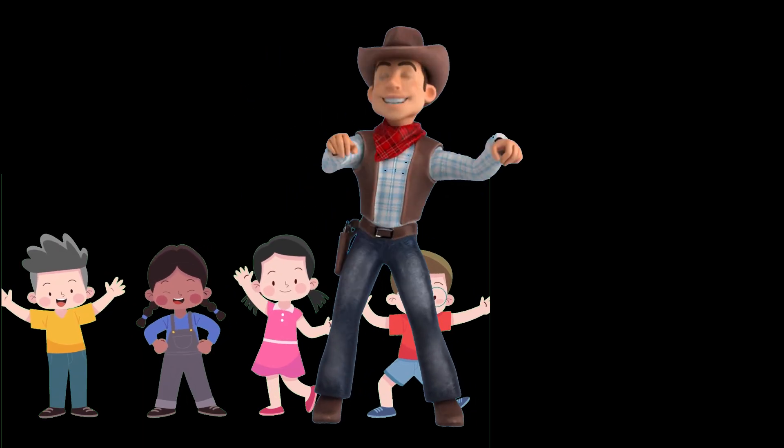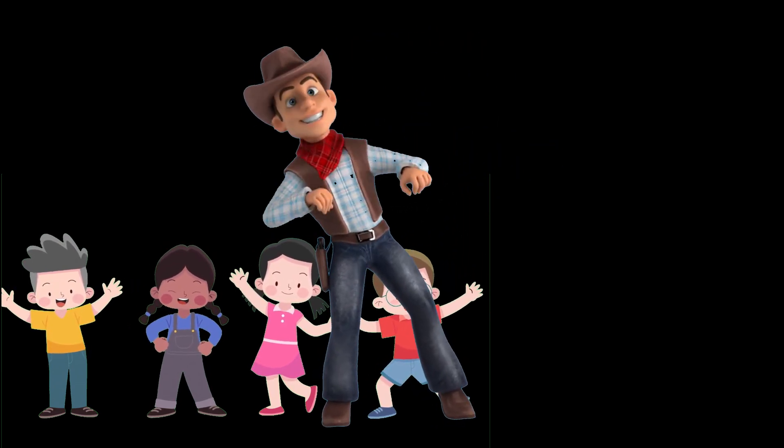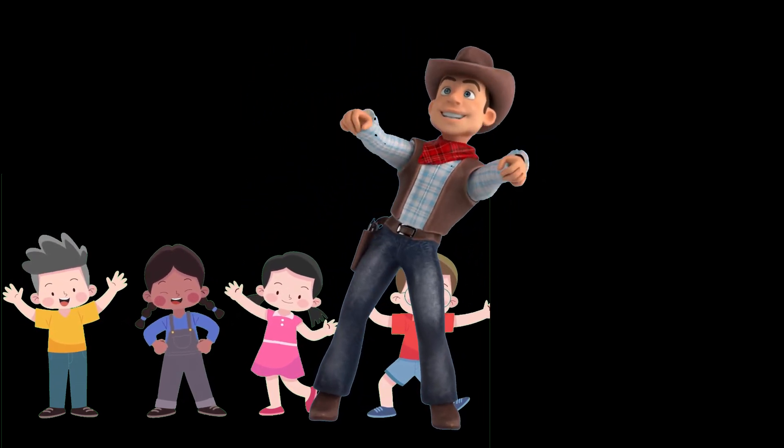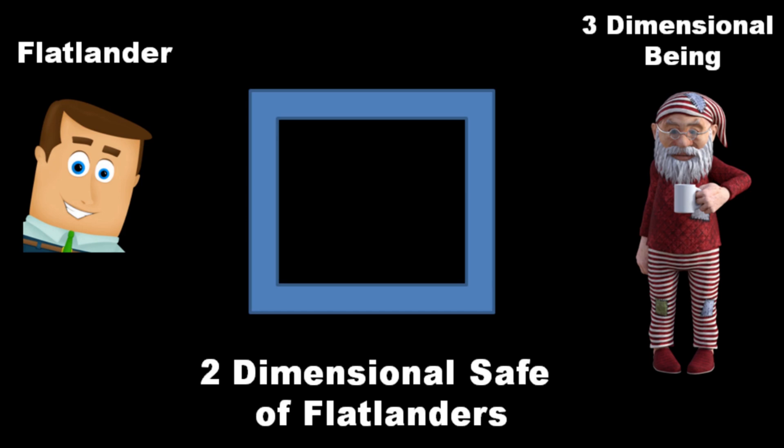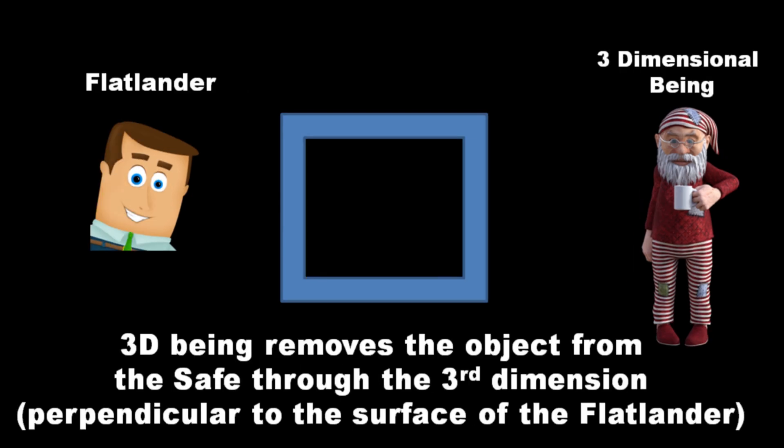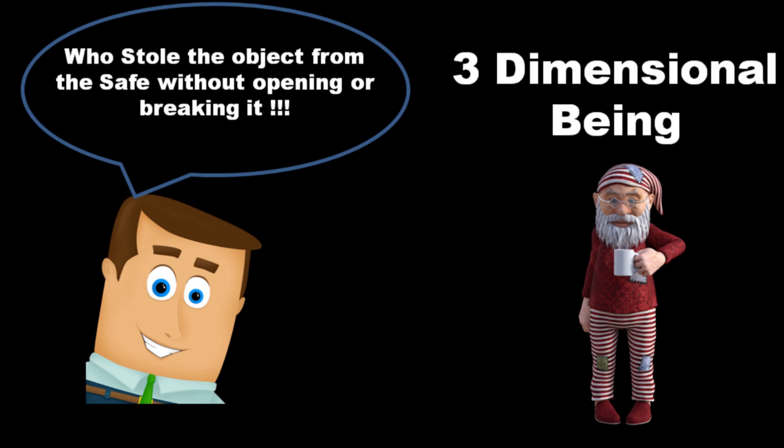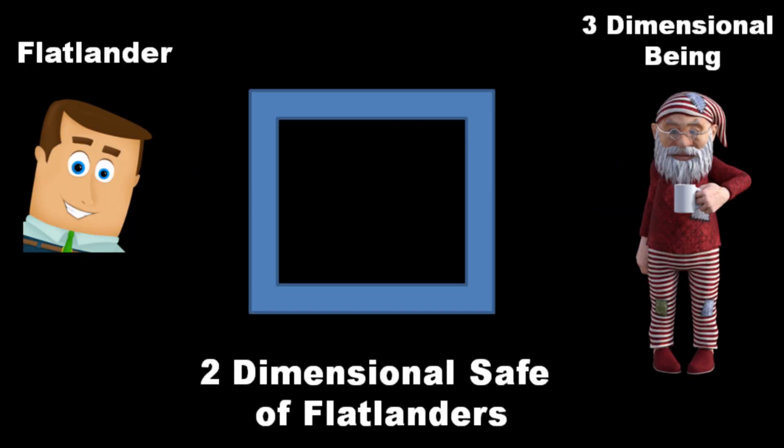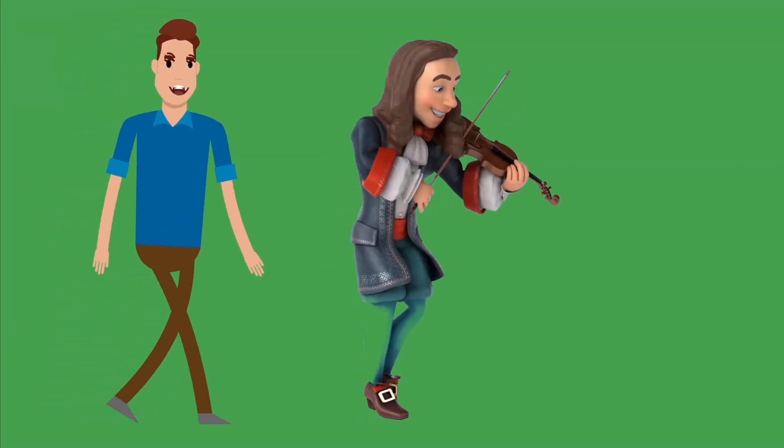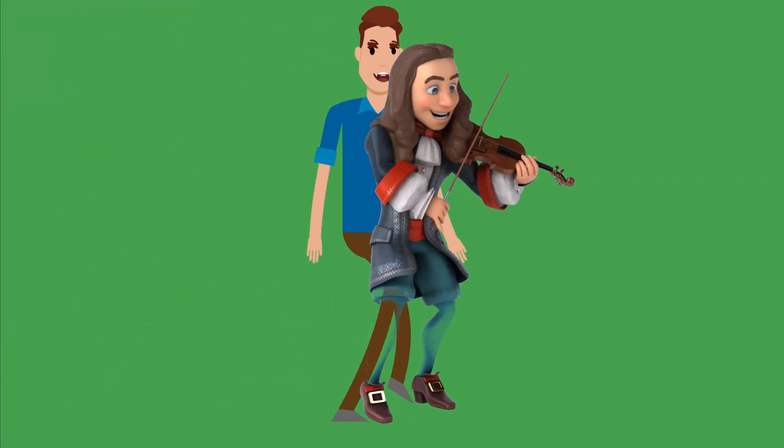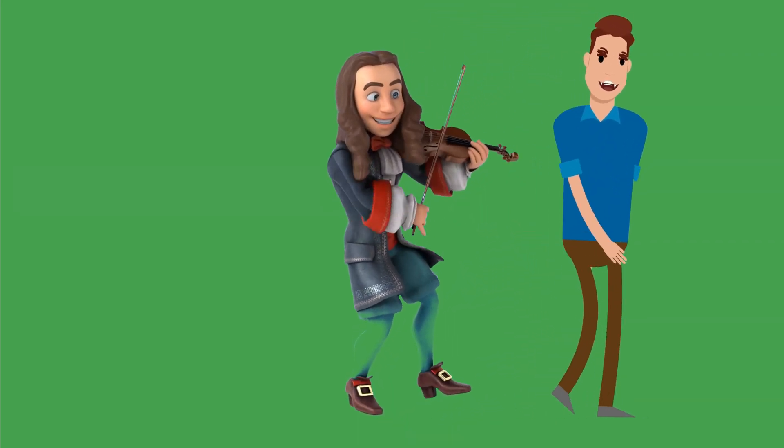Now, if a three-dimensional being entered their world, the Flatlanders would perceive it as having god-like powers. For instance, a 3D being could reach into a Flatlander's safe and remove objects by moving them along the third dimension, something the Flatlanders cannot comprehend or see. In their world, Flatlanders would be amazed and confused by how objects disappear from a safe without breaking it open. They wouldn't see the 3D being if it moved above or below their 2D plane. This concept helps us understand how a higher dimensional being might interact with a lower dimensional world.